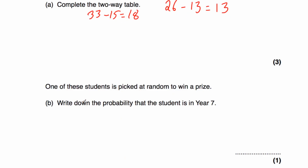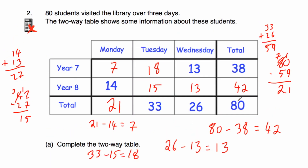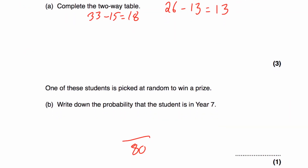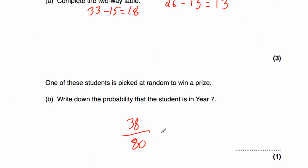Part B says: one of the 80 students is picked at random to win a prize. Write down the probability that the student is in year seven. There are 80 students total and 38 are in year seven. So the probability is 38 out of 80. Dividing both by two gives 19 out of 40 — so 19 fortieths.